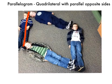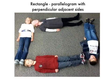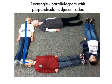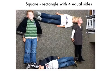Parallelogram is a quadrilateral with parallel opposite sides. Rectangle is a parallelogram with perpendicular adjacent sides. A square is a rectangle with four equal sides.